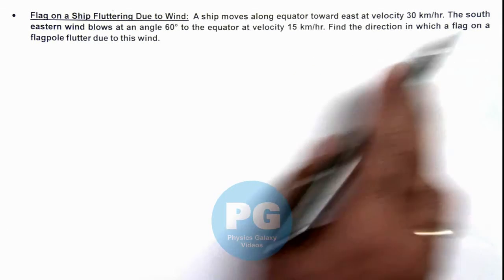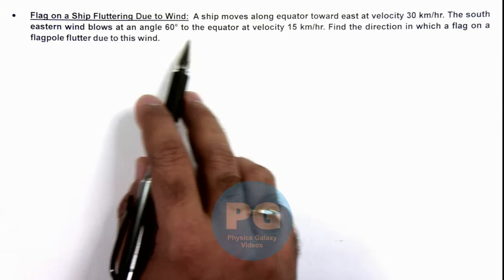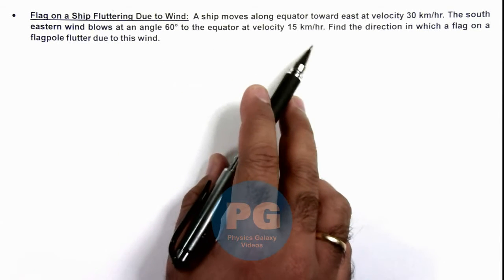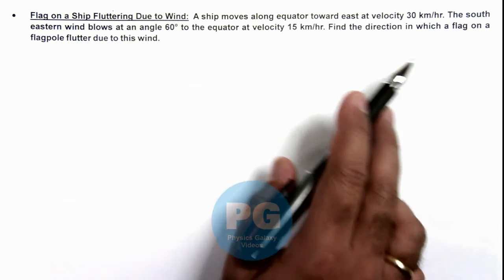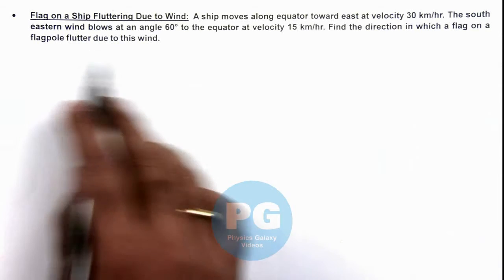A south-eastern wind blows at an angle 60 degrees to the equator at 15 km/h. We are required to find the direction in which the flag on a flagpole flutters due to this wind.